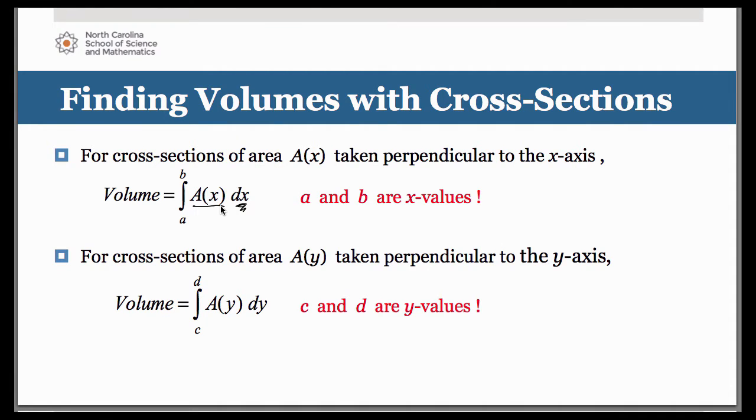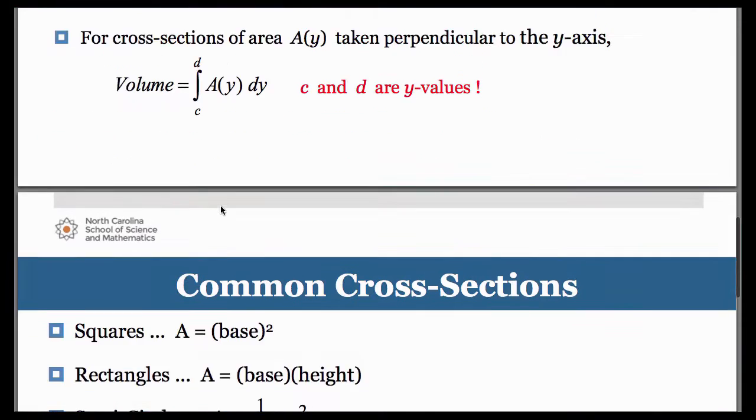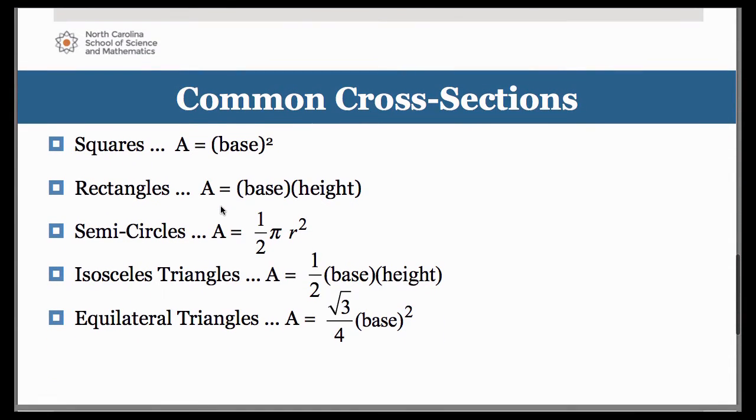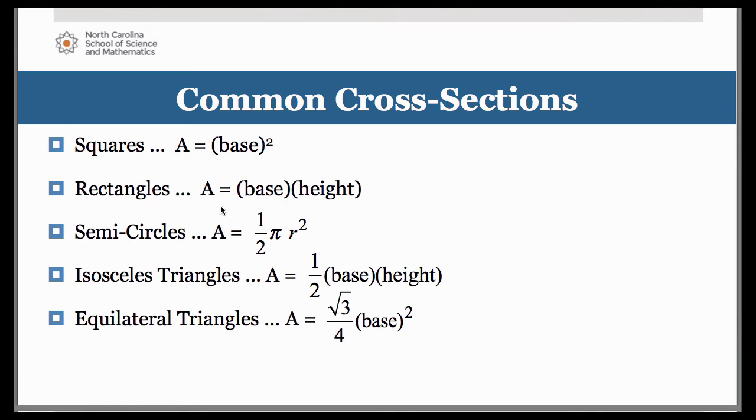You are integrating the area of the type of cross section. So let's talk for a second about the types of cross sections you're mostly going to see. On this slide you see the most common ones. Squares: obviously the length of your representative rectangle becomes the base of that cross sectional square. So to get the area of that you simply do the side, the base, squared. Rectangles: you will be told the height of the rectangle. The representative rectangle creates the base length of the rectangle and then you'll be told the height by which to multiply.